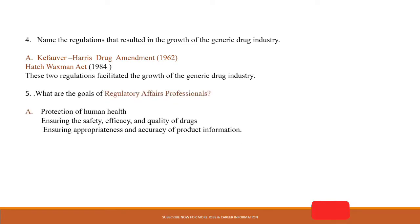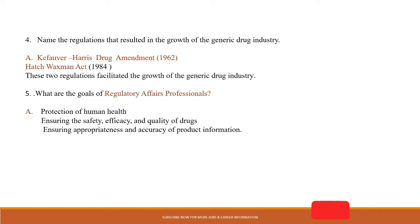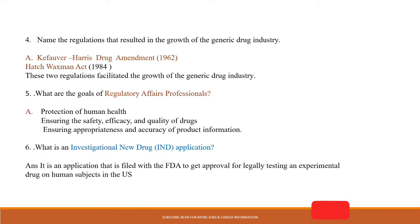As a fresher, you may be asked: What are the goals of a regulatory affairs professional? You can answer like this: To protect human health, ensuring the safety, efficacy, and quality of drugs, and ensuring the appropriateness and accuracy of product information. These are the main goals of any regulatory affairs professional — ultimately, the safety of the public and the consumer.